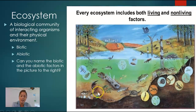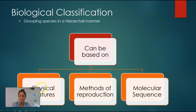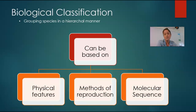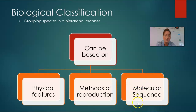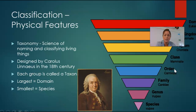An ecosystem is all of the biotic and abiotic factors in that area. When we're referring to ecosystems, we're not just referring to the living things, but also the nonliving things. When we start talking about classification, classification can be based on three different things. The first is grouping organisms by their physical features and what they look like. Secondly, we could group organisms based on their method of reproduction — sexual and asexual, or their life strategy like R and K selection. And lastly, we can classify organisms based on their molecular sequence — either their DNA or their amino acid sequence in their proteins.